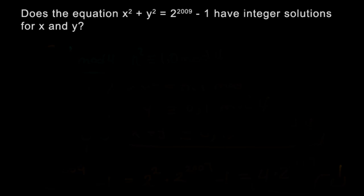Does the equation x² + y² = 2^2009 - 1 have integer solutions for x and y?